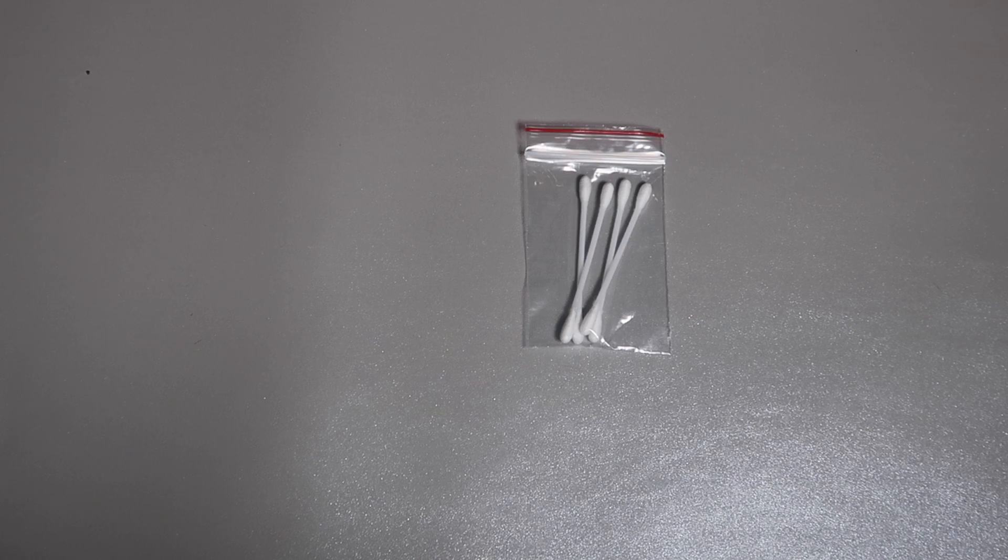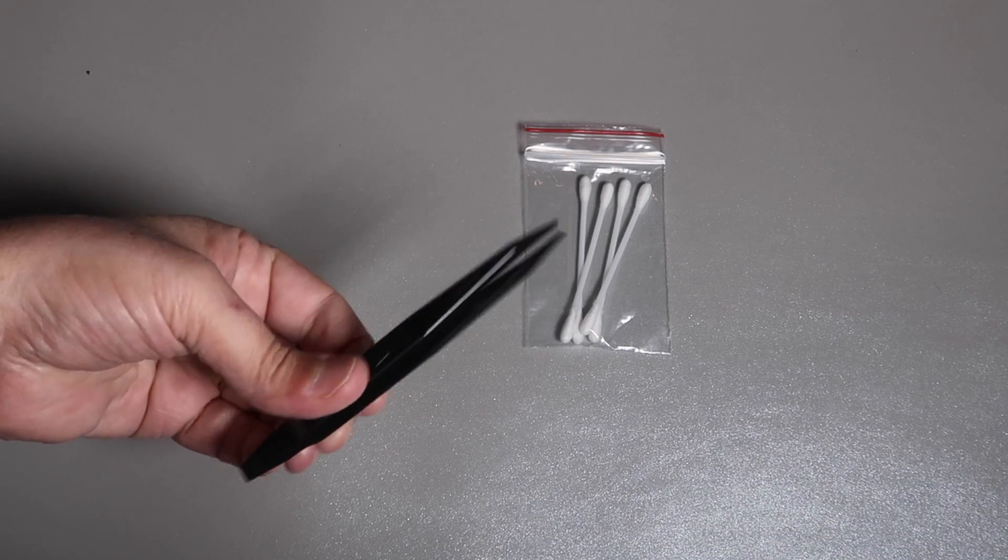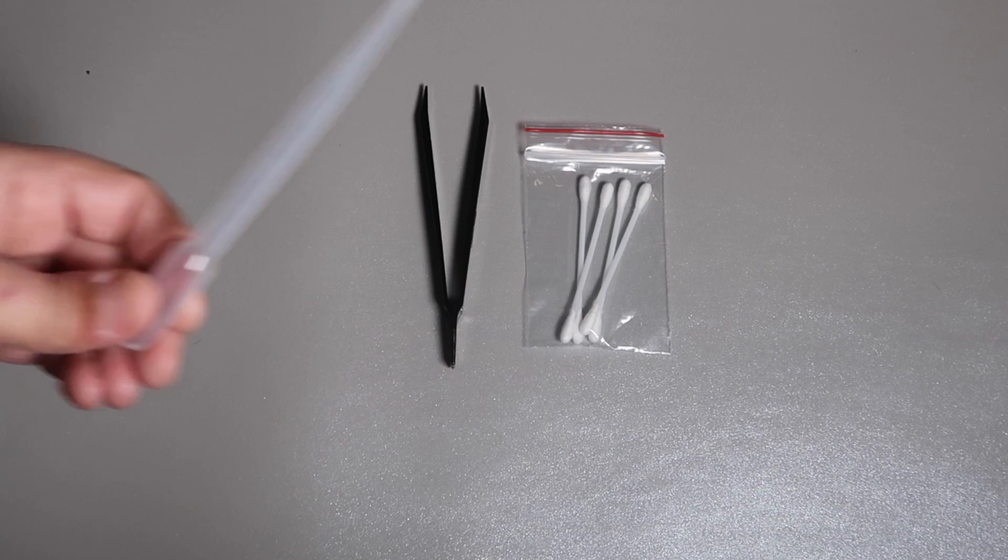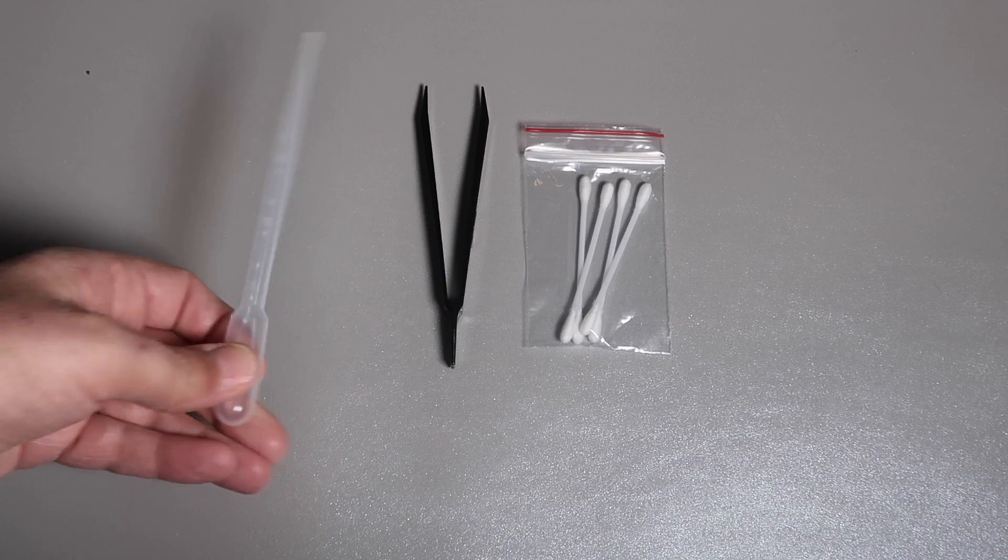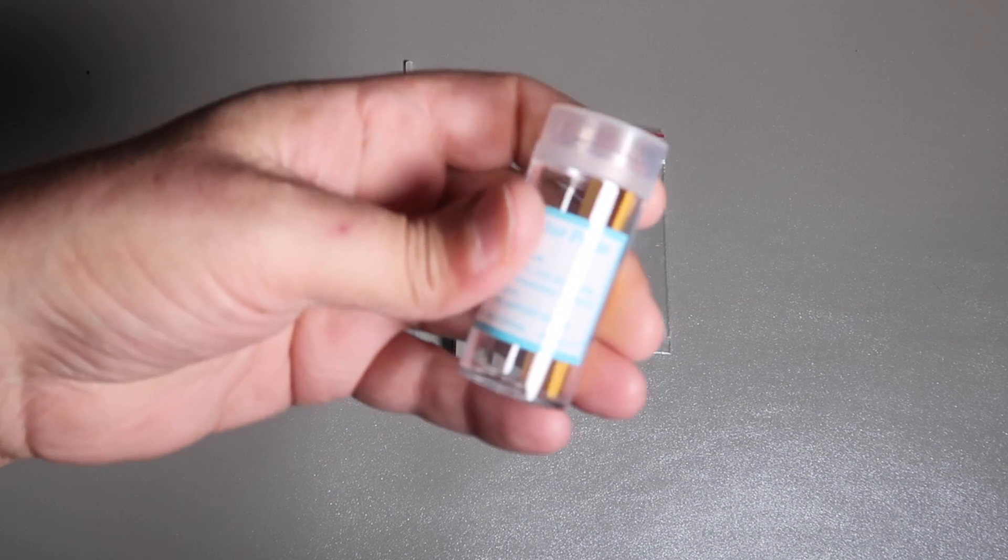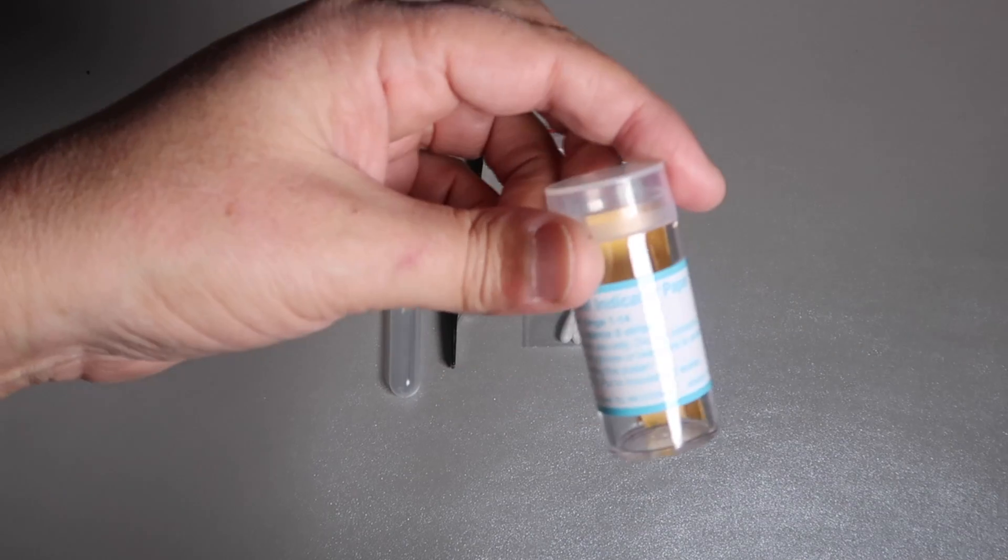Inside the invisible ink bag are some cotton buds, a pair of tweezers, a pipette, and some universal indicator paper.